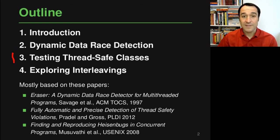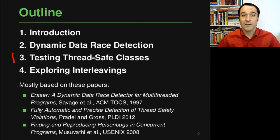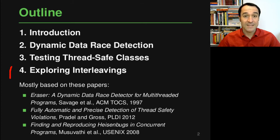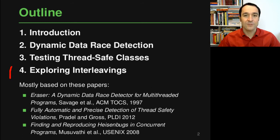Next we look at ThreadSafe classes, which are a very common way of implementing concurrent data structures in object-oriented languages, but there may also be bugs in these implementations and we will see how to find some of those bugs. Finally we look at the general problem of exploring different interleavings that a concurrent program may have, which is relevant for all these approaches because only if you can trigger the right interleaving that triggers a bug can you detect that bug.